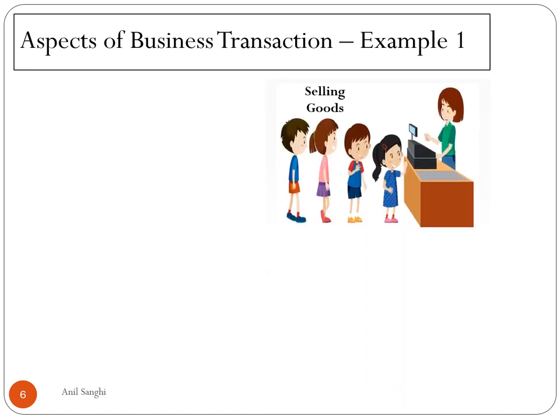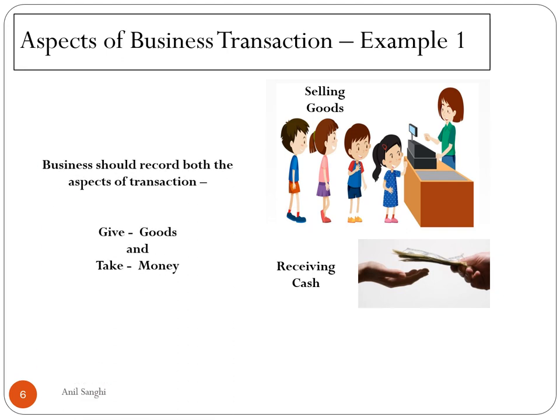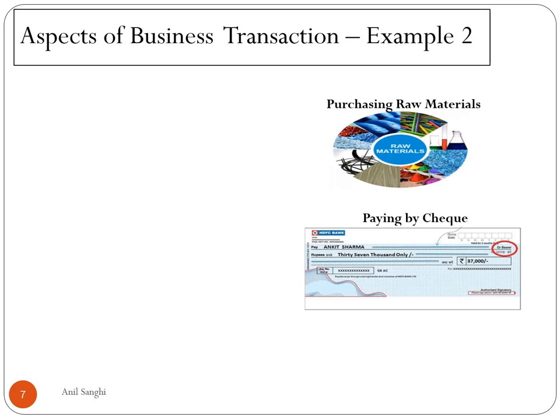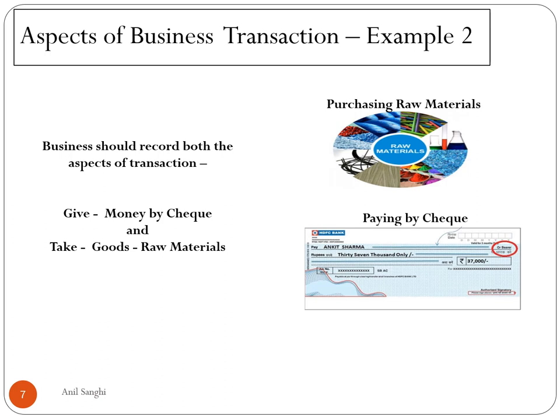Let us look at the aspects of a business transaction with examples. Every day we go to a supermarket and buy goods — the supermarket is selling goods and getting cash in return. The two aspects are: giving goods (called sales) and getting money either as cash or by credit card. Another example: a business purchasing raw material and paying by cheque. The two aspects are: giving money by cheque and taking raw material required for manufacturing the organization's products.